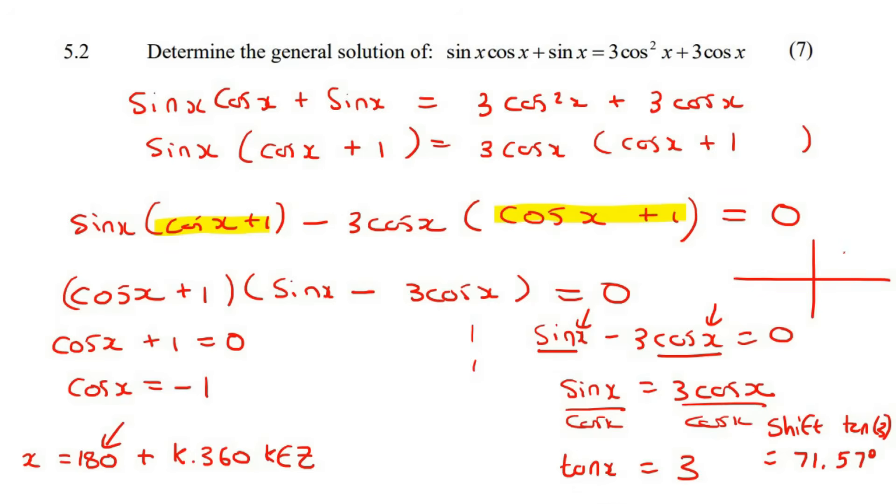Now remember, tan is positive in the first quadrant and in the third quadrant. But remember that with tan, it is nice because you only have to use one of those quadrants. If you forget about that and you use both quadrants, they will never ever penalize you because it's not wrong, it just takes a bit of extra time.